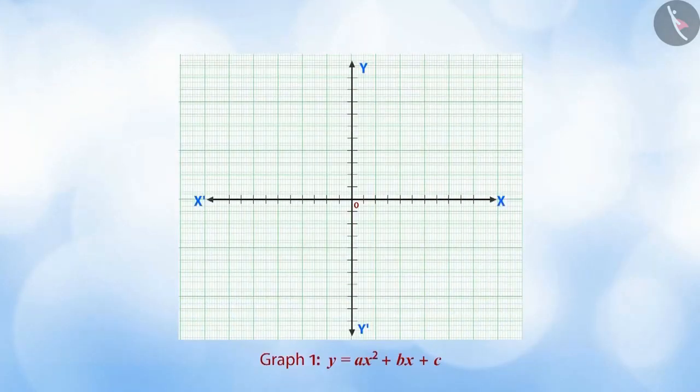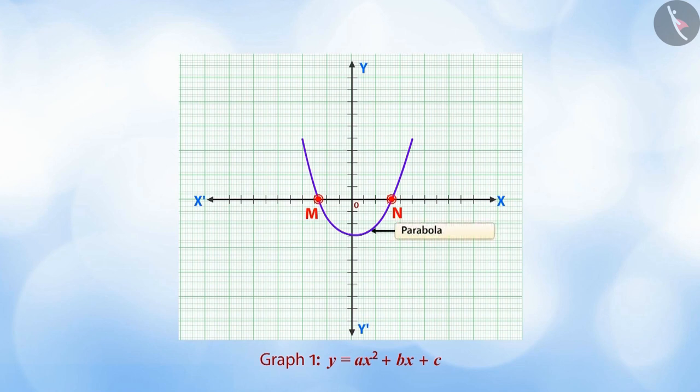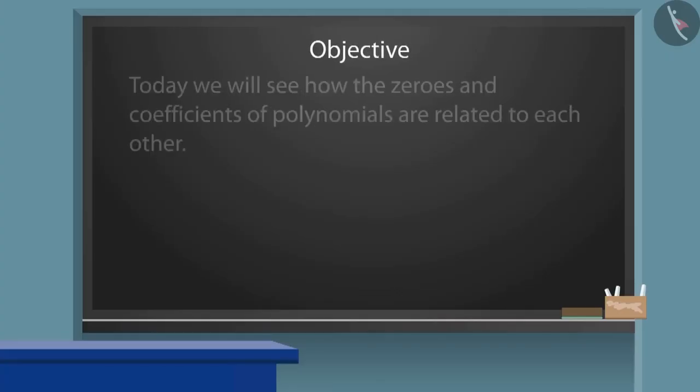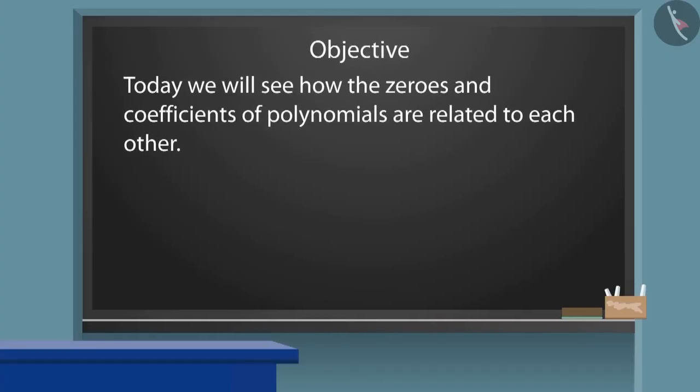Welcome to this video. So far, we have read about the geometric meaning of the zeros of a polynomial. Today, we will see how the zeros and coefficients of polynomials are related to each other.